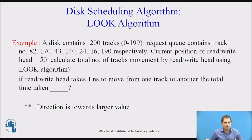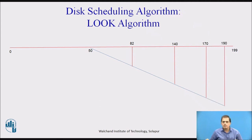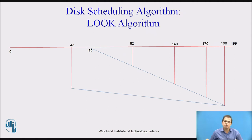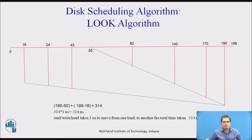Starting at position 50, moving towards larger values: the head visits 82, then 140, then 170, then 190. After 190, there are no more requests in that direction, so it reverses to the lower values: 43, then 24, then 16, where movement stops. The total seek count is: (190 − 50) + (190 − 16) = 314. So the total time taken is 314 nanoseconds.